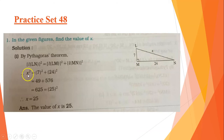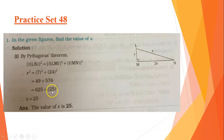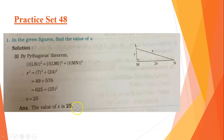LN is x, so x squared is equal to 7 squared plus 24 squared. The square of 7 is 49, and the square of 24 is 576. When we add these, we get 625. So x squared equals 625, which is the square of 25. Therefore x squared equals 25 squared, and taking square root on both sides, x equals 25.